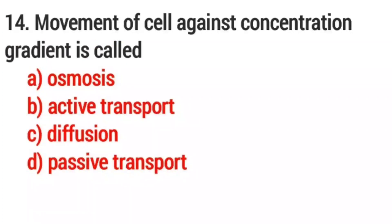14. Movement of cell against concentration gradient is called? Option B. Active transport.